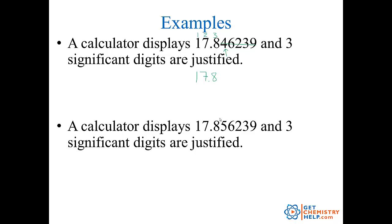What if the calculator displayed 17.856239 and I still want to keep three significant digits? I keep the first three — one, two, three — but the first non-significant digit is now a five. Rounding rule number two says five or greater means add one onto the last significant digit, which is this eight, and still drop all the non-significant ones. So 17.8 becomes 17.9.